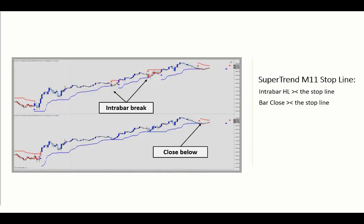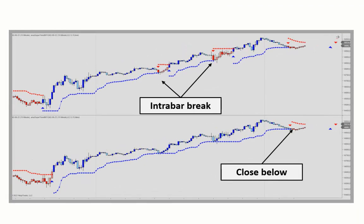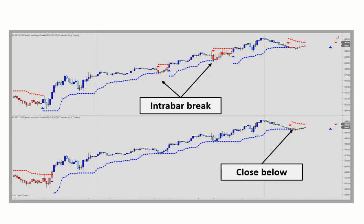There are two options for defining the break of the stop line: intra-bar high and low, as opposed to the close above or below. We have used the close option as the default setting to reduce the number of whipsaws — requiring the bar to actually close below for the long scenario, whereas using high and low values triggers a number of trend changes or alternating stop lines.